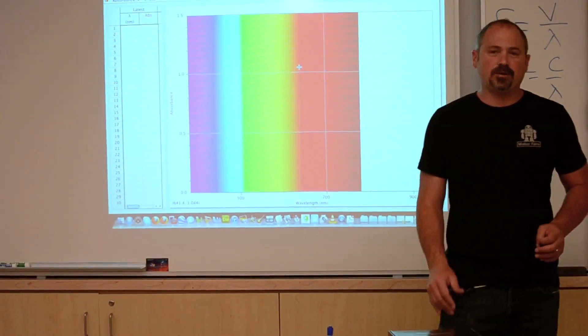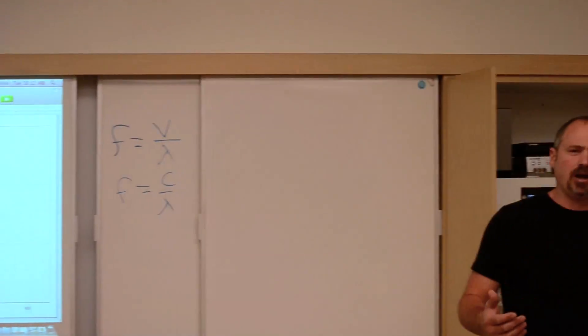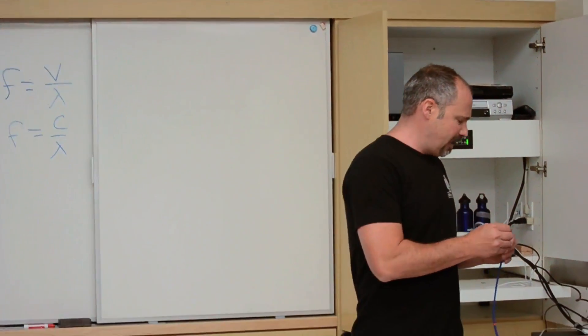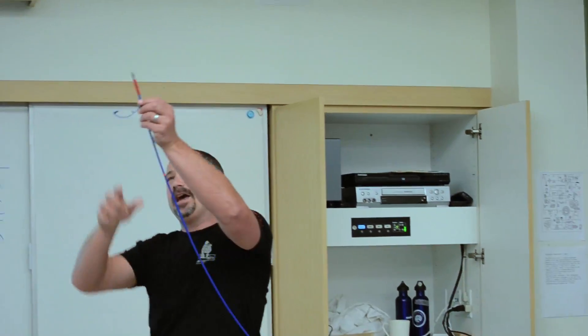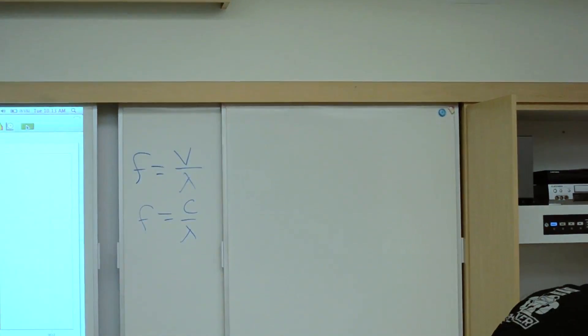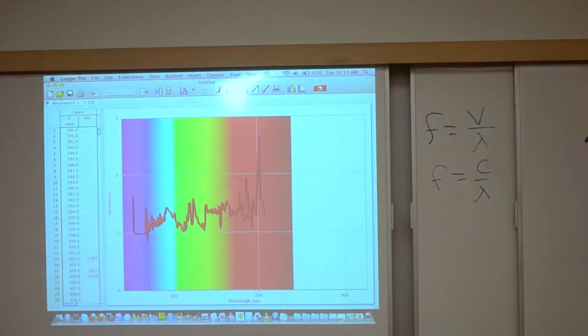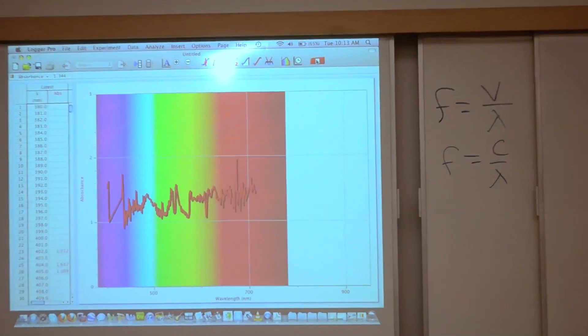Now first of all, you probably know this, but white light is all the colors combined. And I can show you that by just holding up this fiber optic to the sort of ambient white light in the room. And if I do that, you see you get a pretty flat spectrum. All the colors are represented.